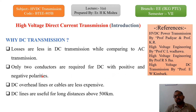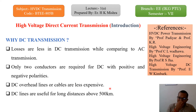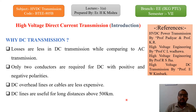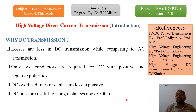Only two conductors are required for DC with positive and negative polarities, reducing conductor cost and I²R losses. DC overhead lines or cables are less expensive compared to AC systems, as DC requires only two cores while AC star systems require four cores. DC transmission is more useful for long distances above 500 km. At around 500-600 km, the transmission cost is the same for both AC and DC. Below 500 km, AC is more efficient; above 500 km, DC is more efficient for the same power transmission.